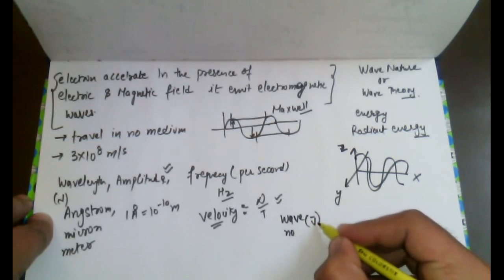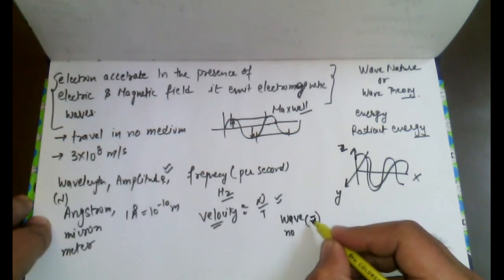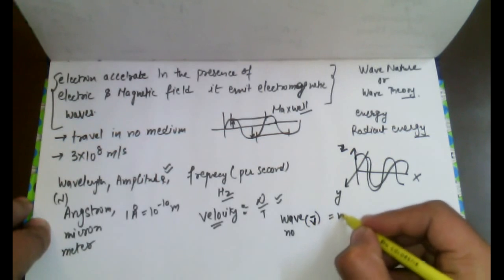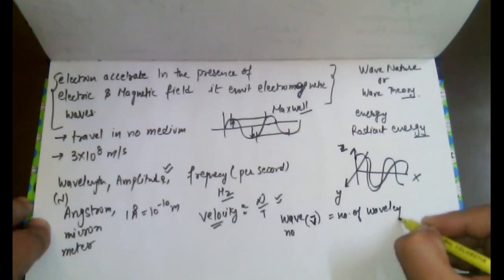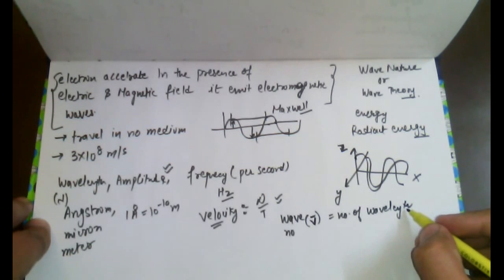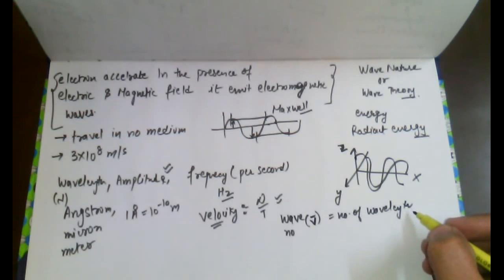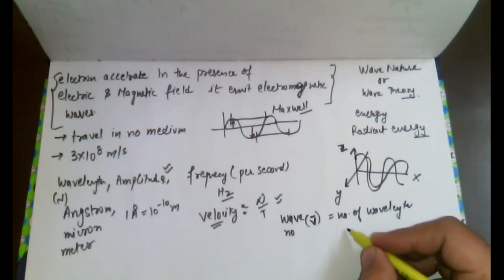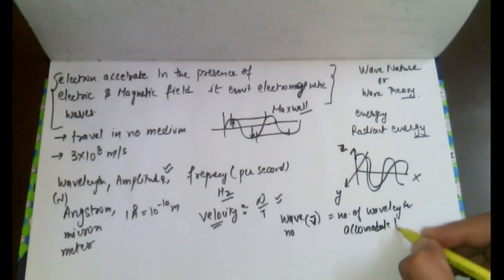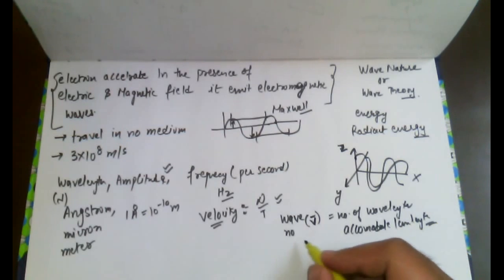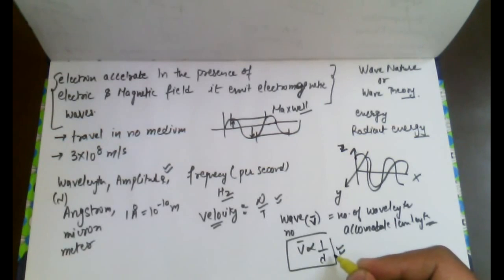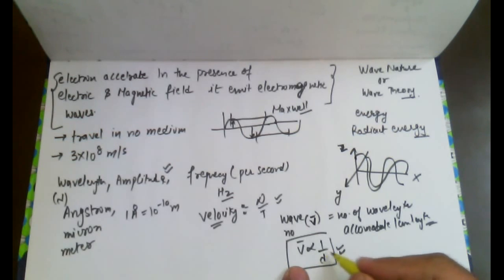Wave number is represented by the symbol v-bar (v with a bar on its head). Wave number is defined as the number of wavelengths which can accommodate one centimeter length. You can also remember the simple formula that wave number is always inversely proportional to wavelength. The SI unit of wave number is per meter.